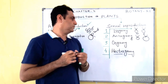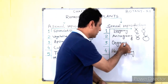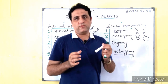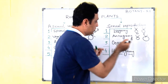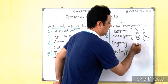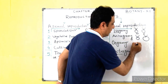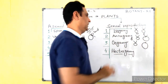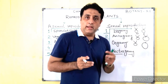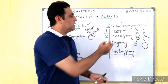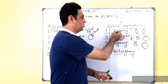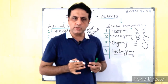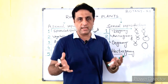Now talking about oogamy: oogamy is a totally different type of sexual reproduction in which the male gamete is smaller and has flagella, while the female gamete is larger and without flagella. That is called oogamy. These three types — isogamy, anisogamy, and oogamy — are examples found in lower plants like algae, fungi, and protozoa.